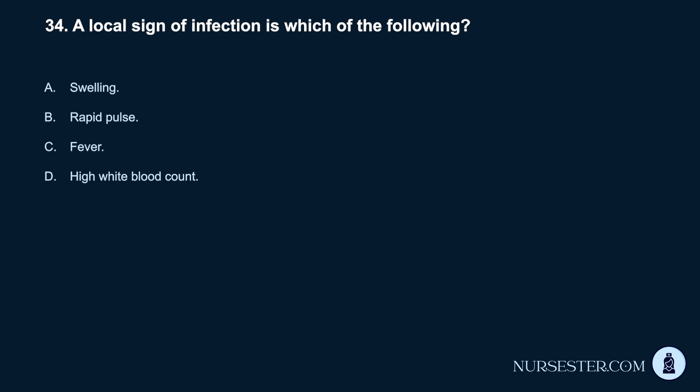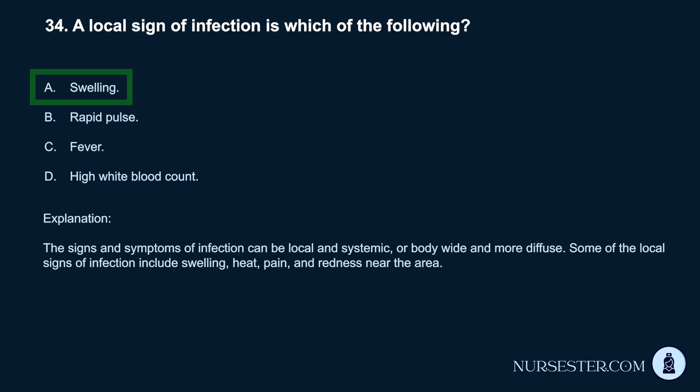Question 34. A local sign of infection is which of the following? a. Swelling. b. Rapid pulse. c. Fever. d. High white blood count. Correct answer: a. Swelling. The signs and symptoms of infection can be local and systemic, or body-wide and more diffuse. Some of the local signs of infection include swelling, heat, pain, and redness near the area.